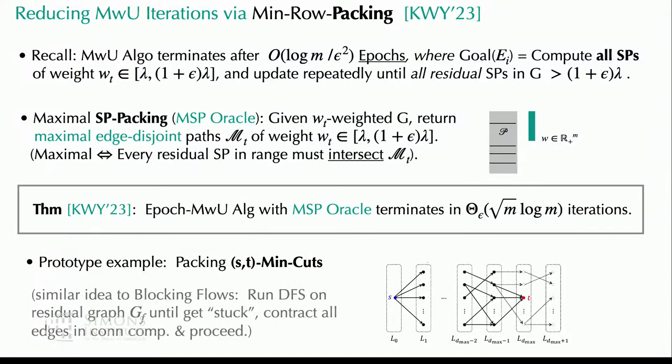You might worry that this oracle is much more expensive to implement than the min-row. But here's a prototypical proof of concept: you can implement the packing oracle at essentially the same cost as the single oracle. For the ST setting it is exactly a blocking flow — essentially the ST min cut. You invoke a single call to max flow, which we now know how to do in near-linear time, and you can collect all the cuts for the same price.